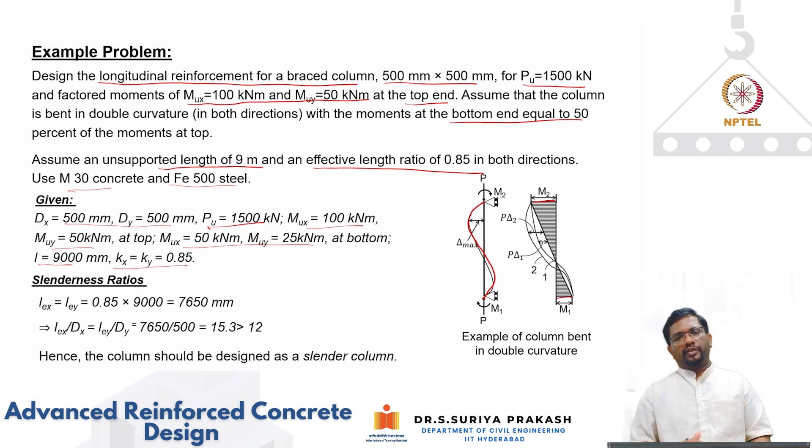L is equal to 9000 mm and reduction factor, the slenderness factors, k factors are 0.8. Now let us calculate the slenderness ratio. Le_x and Le_y is 0.85 multiplied by 9000, it works out to be 7650 mm and you divide by your depth you get 15.3 which is greater than 12. So definitely it is not a short column but it is not a very slender column also.